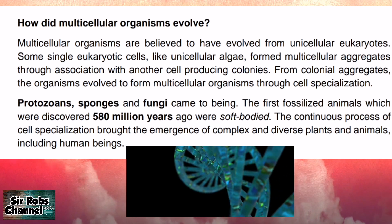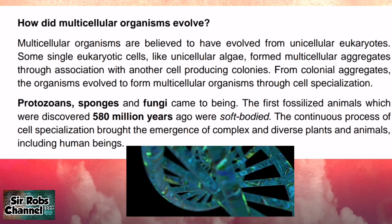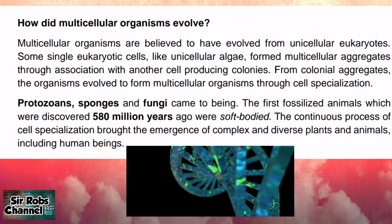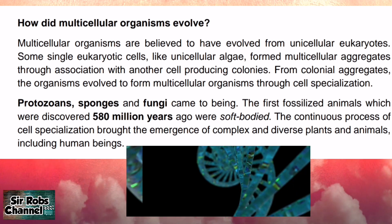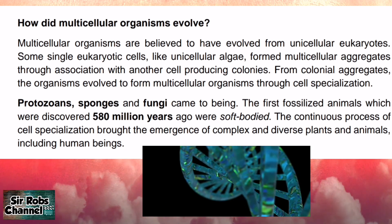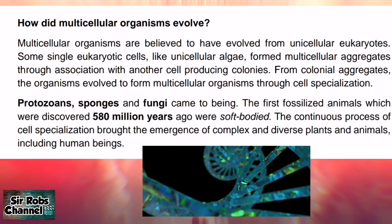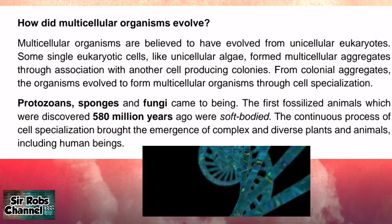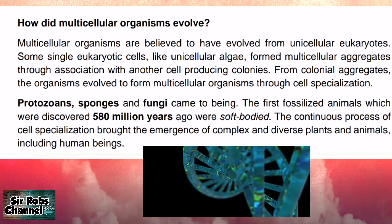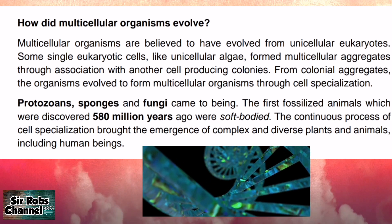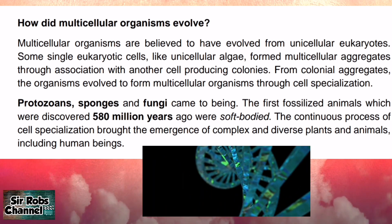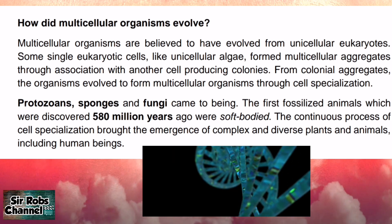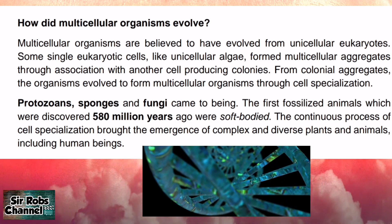How did multicellular organisms evolve? Multicellular organisms are believed to have evolved from unicellular eukaryotes. From single eukaryotic cells like unicellular algae, multicellular aggregates formed through association with other cells, producing colonies. From colonial aggregates, organisms evolved into multicellular organisms through cell specialization. This is how protozoans, sponges, and fungi came to being.